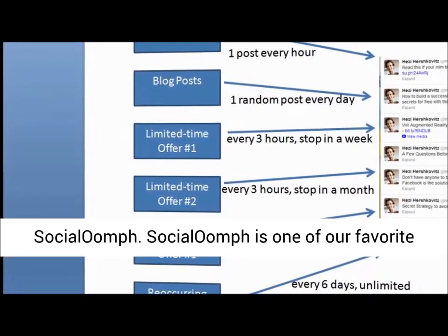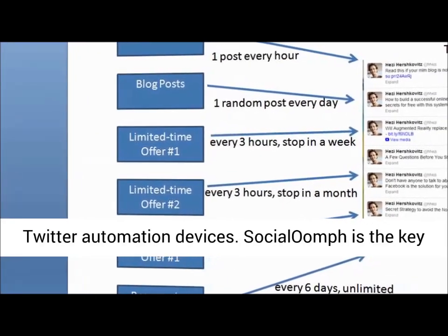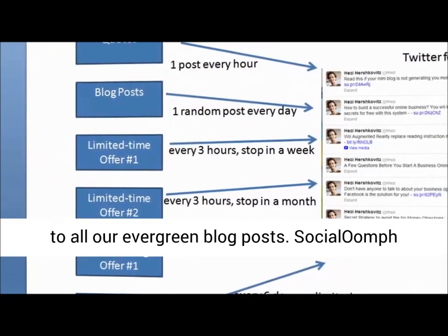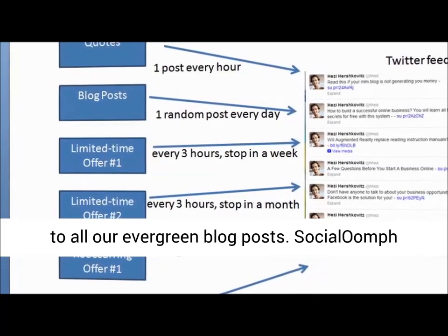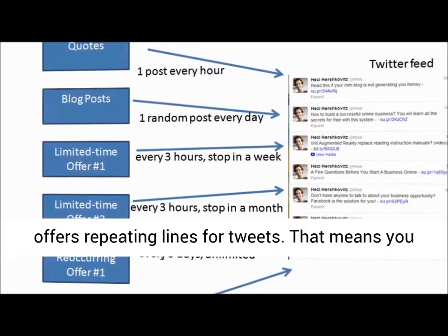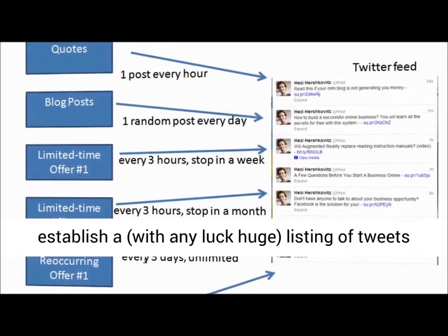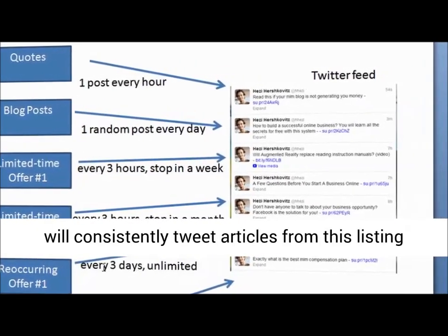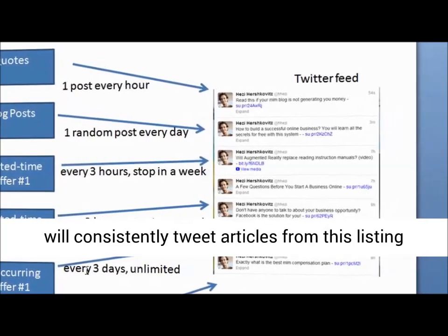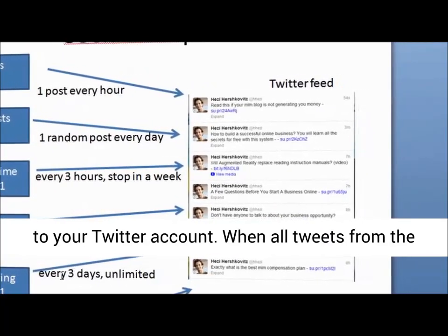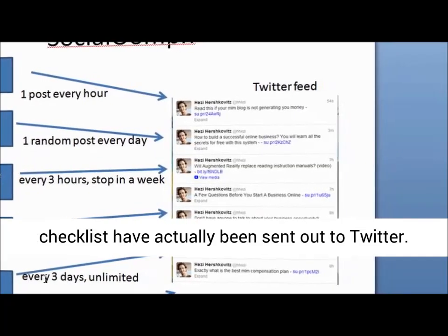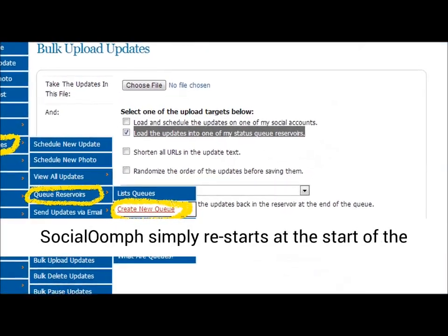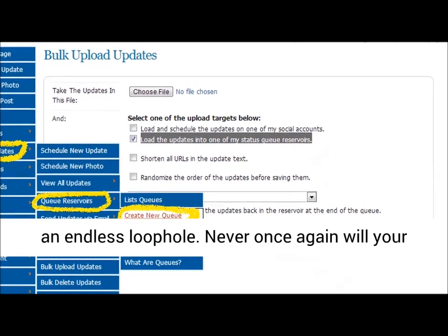Social Oomph is one of our favorite Twitter automation tools and the key to our consistently high website traffic from Twitter to all our evergreen blog posts. Social Oomph offers recurring queues for tweets — you set up a, hopefully large, list of tweets to evergreen content and Social Oomph will consistently tweet posts from this list to your Twitter account. When all tweets from the list have been sent, Social Oomph simply restarts at the beginning and keeps sending tweets on an endless loop.